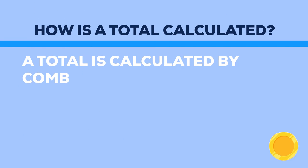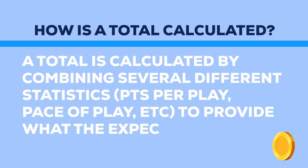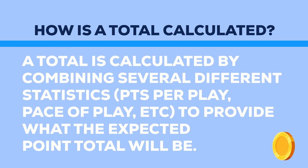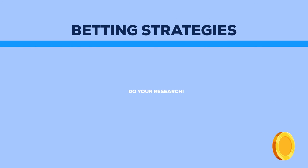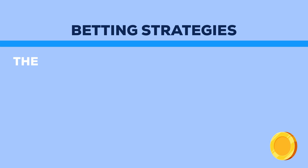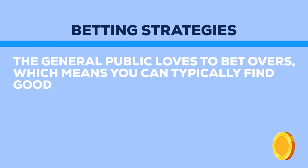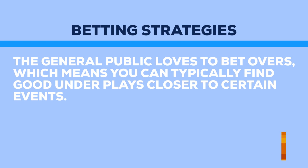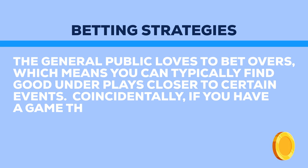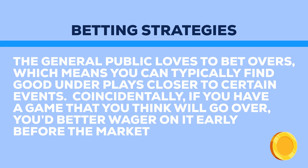How is a total calculated? A total is calculated by combining several different statistics — points per play, pace of play, etc. — to provide what the expected point total will be. Betting strategies: first, do your research. Also, the general public loves to bet overs, which means you can typically find good underplays closer to certain events. And if you have a game you think will go over, wager on it early before the market moves too much.